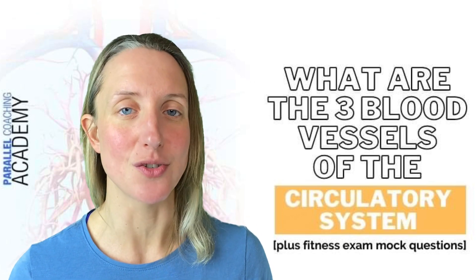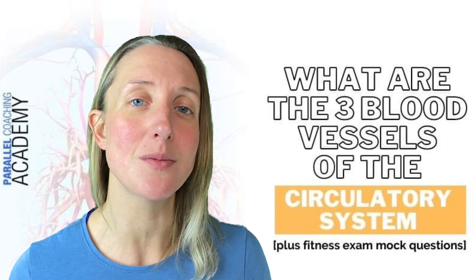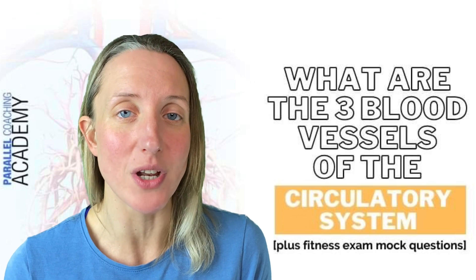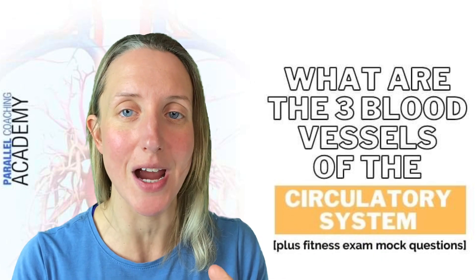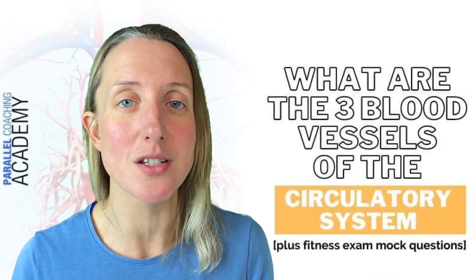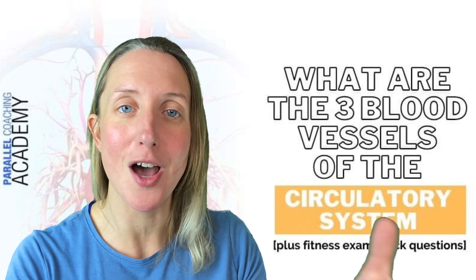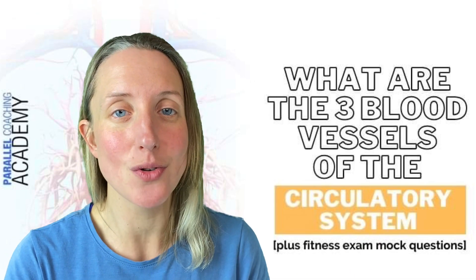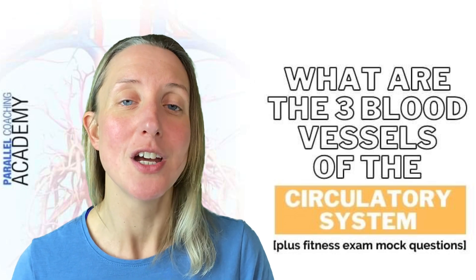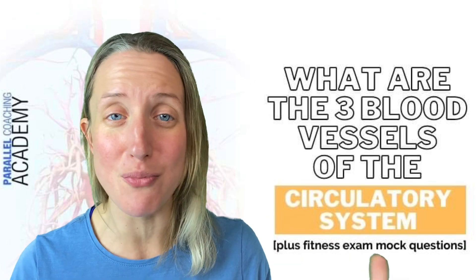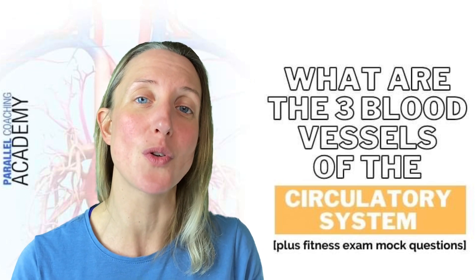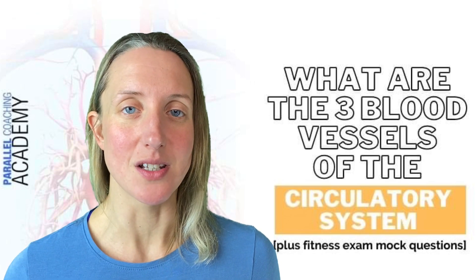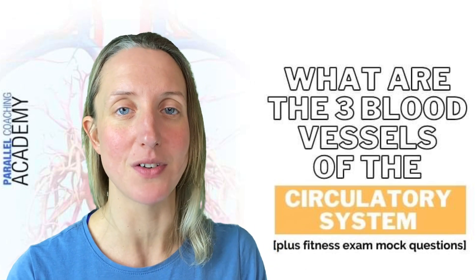Let's first explore the circulatory system. The circulatory system consists of our heart and our blood vessels. Its role is to transport blood around the body — the heart contracts and sends the blood around the body so it can pick up oxygen from the lungs, drop off carbon dioxide at the lungs, and deliver that oxygen to the working muscles, organs, and brain, then remove the waste products and take it back out.